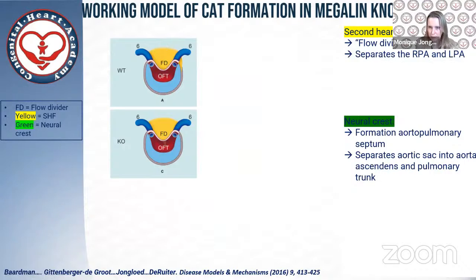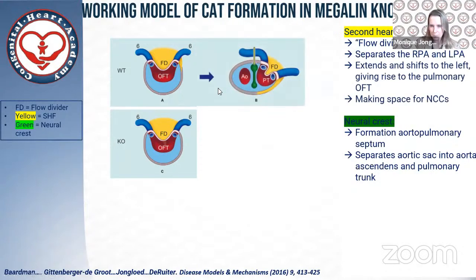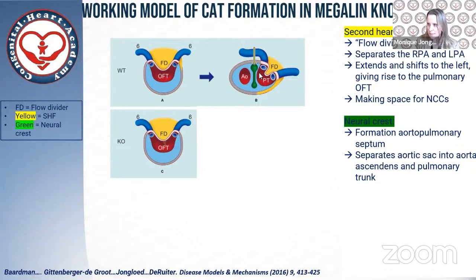The second heart field contributes to a so-called flow divider — basically a ridge you can also recognize in the embryo in the midst of the developing outflow tract. It is situated between both pharyngeal arteries, the left of which will become the arterial duct. During normal development, the second heart field, including this flow divider, will remodel and shift more towards the left side, giving rise to the left pulmonary outflow tract. This process is important because it makes room for the neural crest cells that will migrate towards the heart.